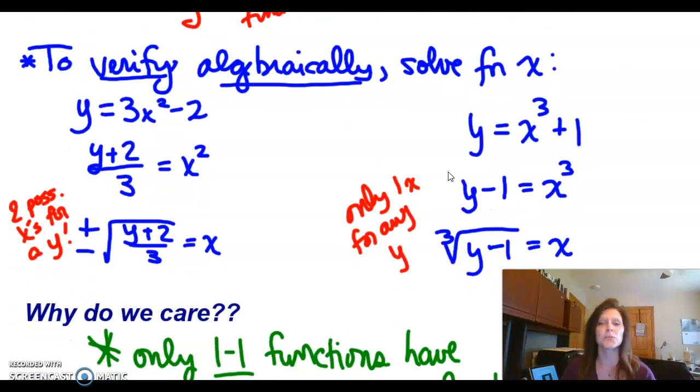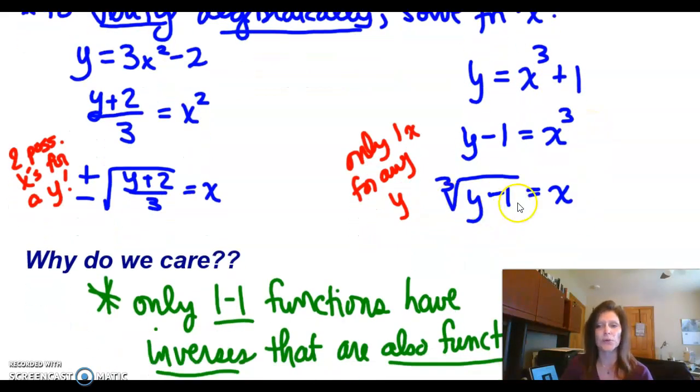If I want to verify algebraically just to be sure, I would just take my function and I would solve it for x. So if I have y equals x to the third plus 1, subtract the 1 and take the cube root. Well there's only one cube root. It's not a plus or minus, right? So when I put in a y value, I will get one specific x for that.